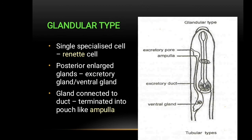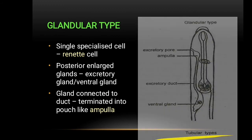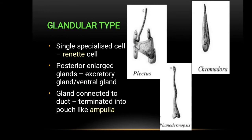Let's see about the glandular type. It is a primitive and basic type. It has a renette cell, which is a specialized cell of the nematode body, consisting of a simple single ventral gland cell without collecting tubules. The ventral gland is connected to the excretory pore by a duct that terminates in a pouch-like structure known as an ampulla. A great example is Chromadora.